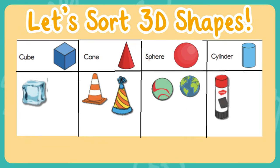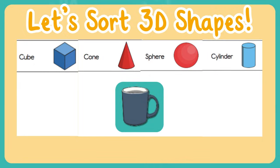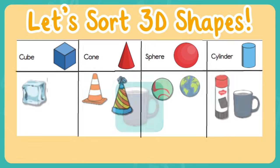What is our next shape? It's a mug. What kind of 3D shape is a mug? That's right, it's a cylinder.